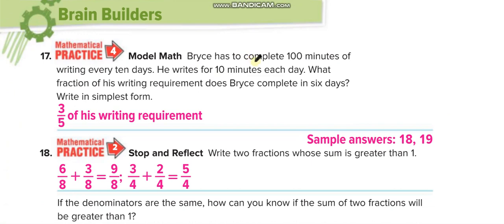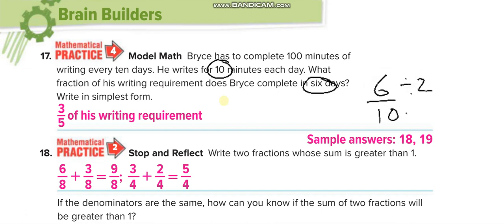Ava has to complete 100 minutes of writing every 10 days. She writes 10 minutes each day. What fraction of her writing requirement does she complete in 6 days? She writes 10 minutes every day, so 6 over 10. To simplify, divide by 2 up and down: 3 over 5 of her writing requirement.